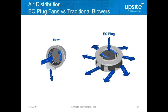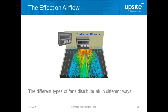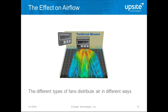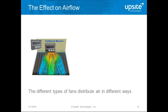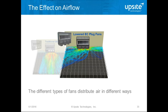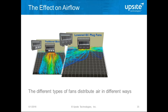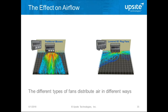EC fans are fundamentally different to traditional centrifugal blowers in cooling units — the flow pattern is quite different. Traditional blowers create air that comes down out of the cooling unit, hits the solid floor, and tends to be distributed forwards and to the sides. EC fans create a plug flow and are often installed dropping down into the raised floor. The rotational motion results in airflow going in a very different pattern, which may or may not be a problem in the room.